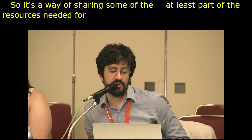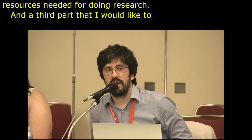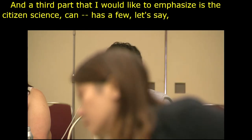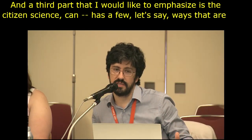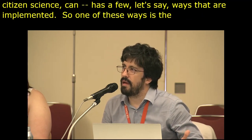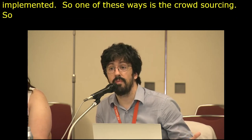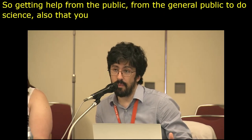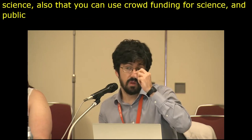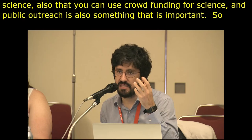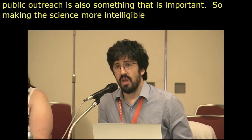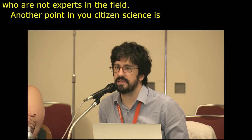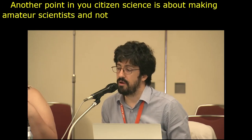A third part is citizen science, which can be implemented in a few ways. One is crowdsourcing — getting help from the general public to do science. Also crowdfunding for science. Public outreach is also important: making science more intelligible and accessible to people not expert in the field. Citizen science also involves enabling amateur scientists to contribute better to science.